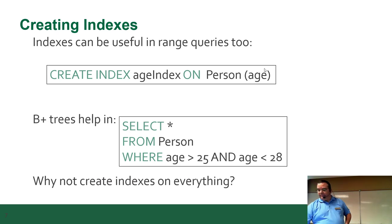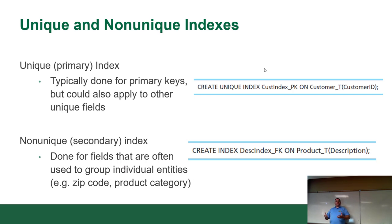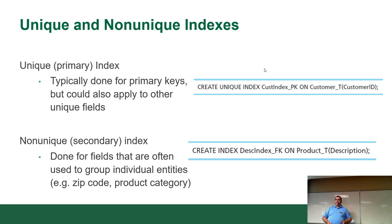There are rules for creating indexes, and two specific kinds: unique indexes, which are usually used for primary keys but can also be used for other fields — for example, making email addresses unique to ensure you never put the same email in the table twice, or SIN numbers or passport numbers you don't want entered more than once.